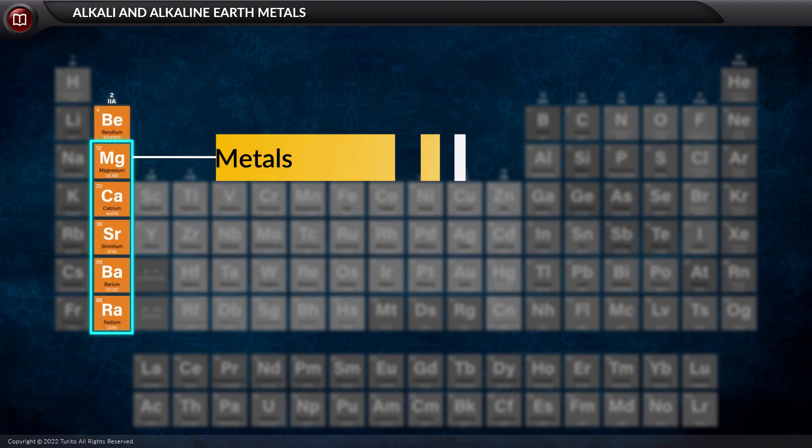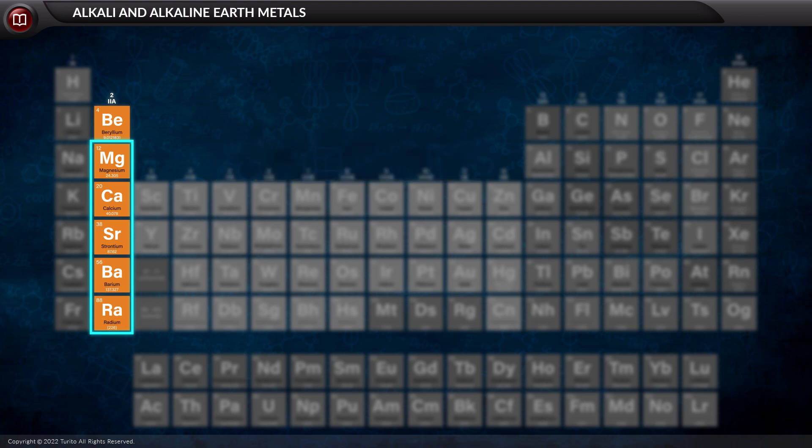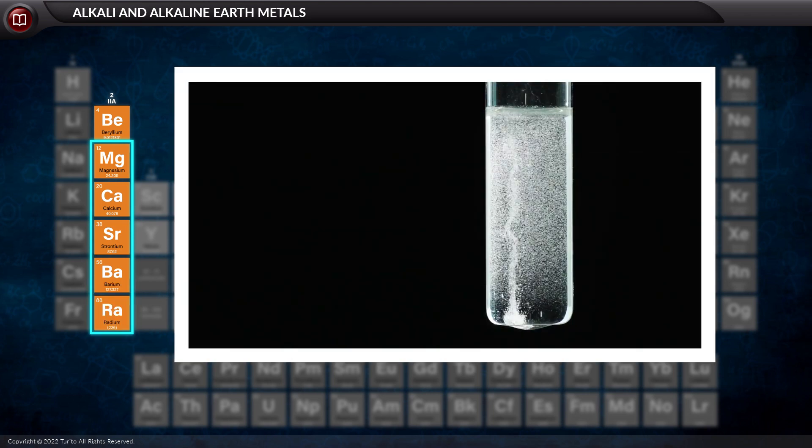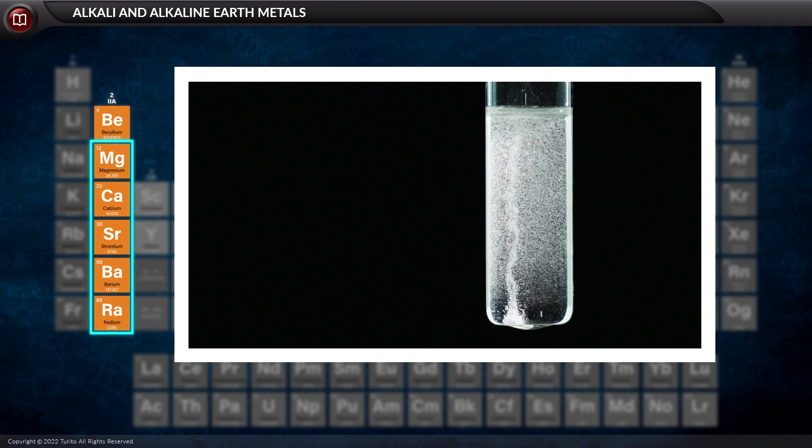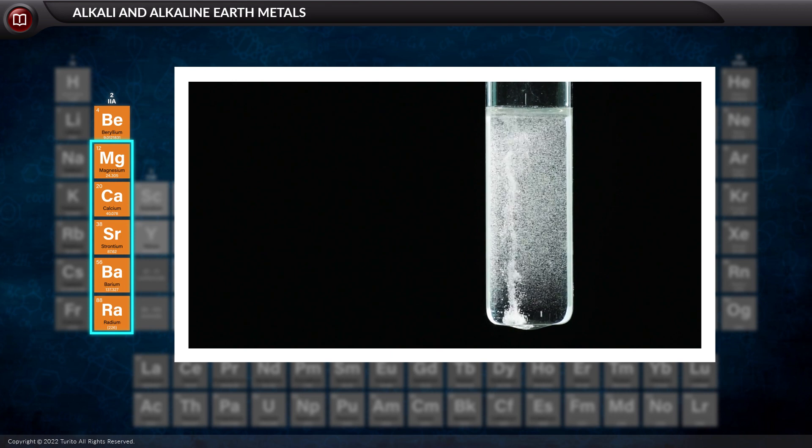Let us now go to alkaline earth metals. Alkaline earth metals are the elements that are present in group two of the modern periodic table. They are magnesium, calcium, strontium, barium, and radium. All alkaline earth metals often react with water to form highly alkaline hydroxides, which should be treated with great caution.